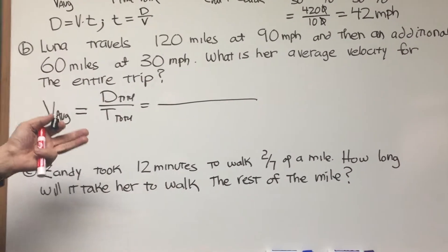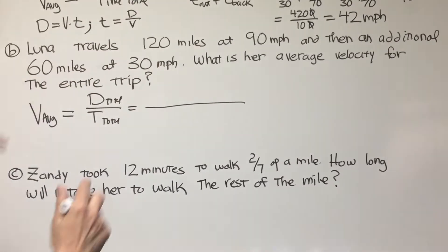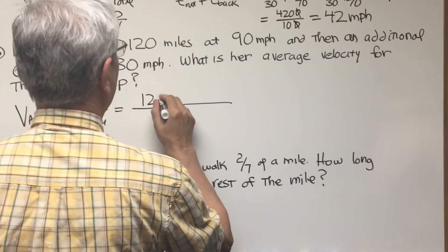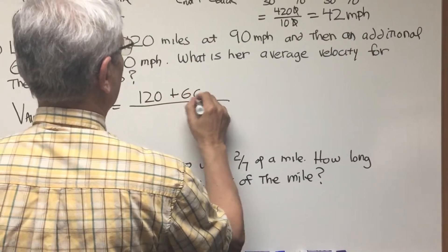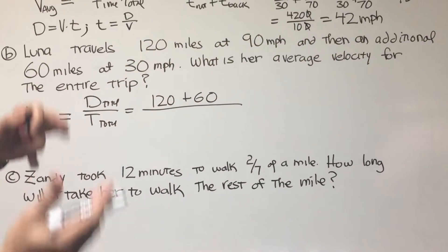All right, so let's proceed exactly as we did before. What's the total distance? Well that's very easy. She travels 120 miles and then 60 miles. 120 plus 60. Now we're going to add the two times together. Time one plus time two.